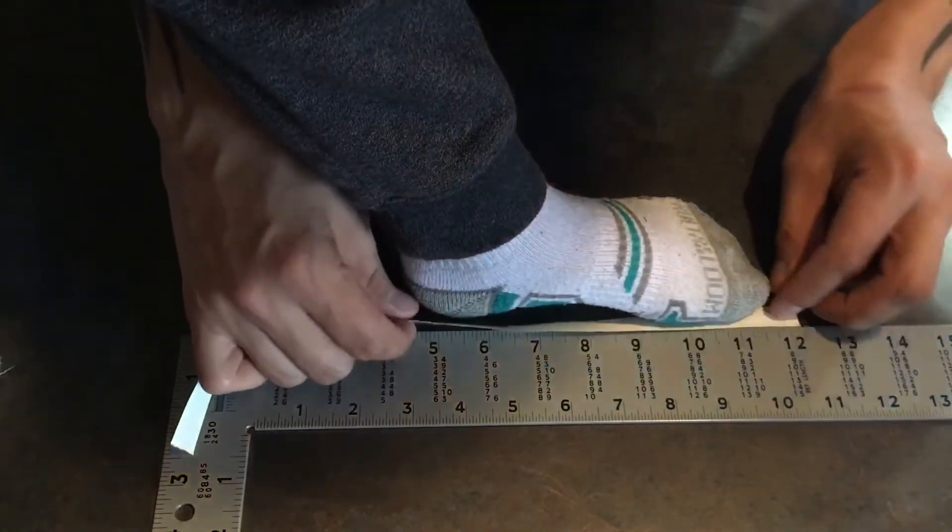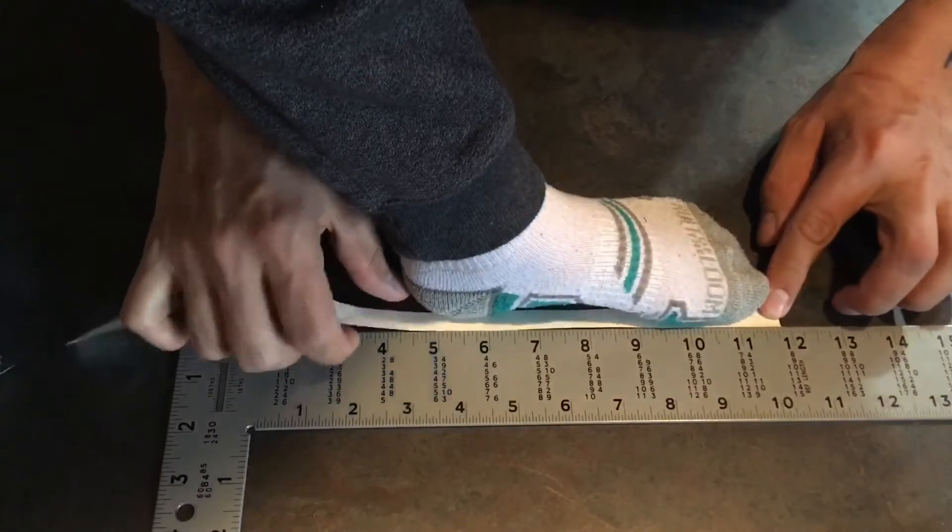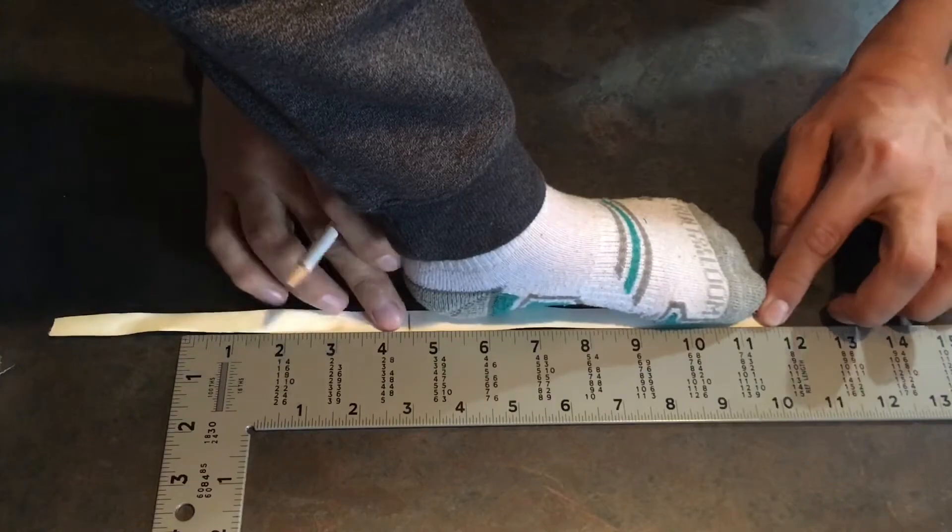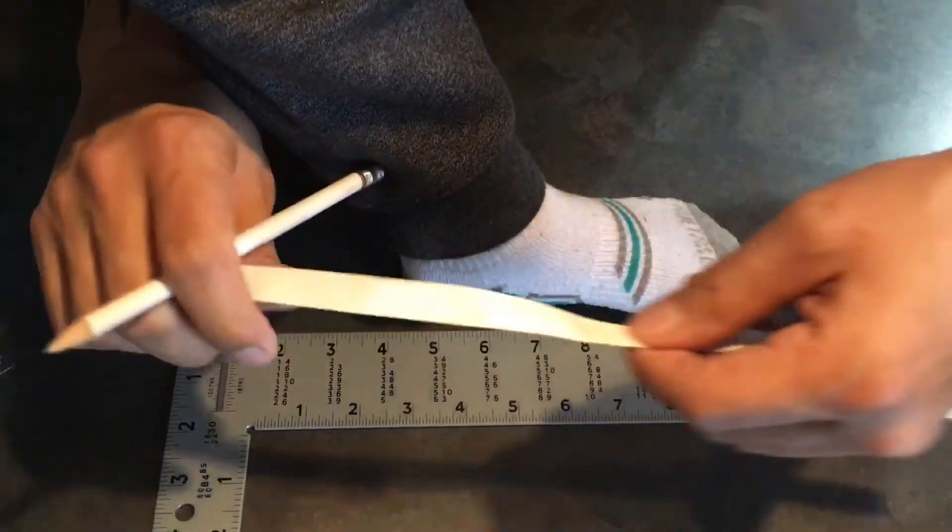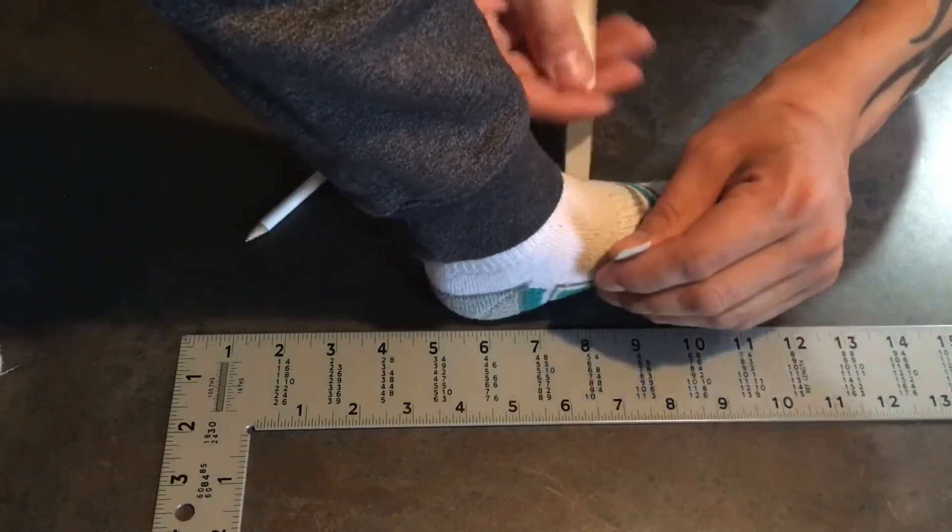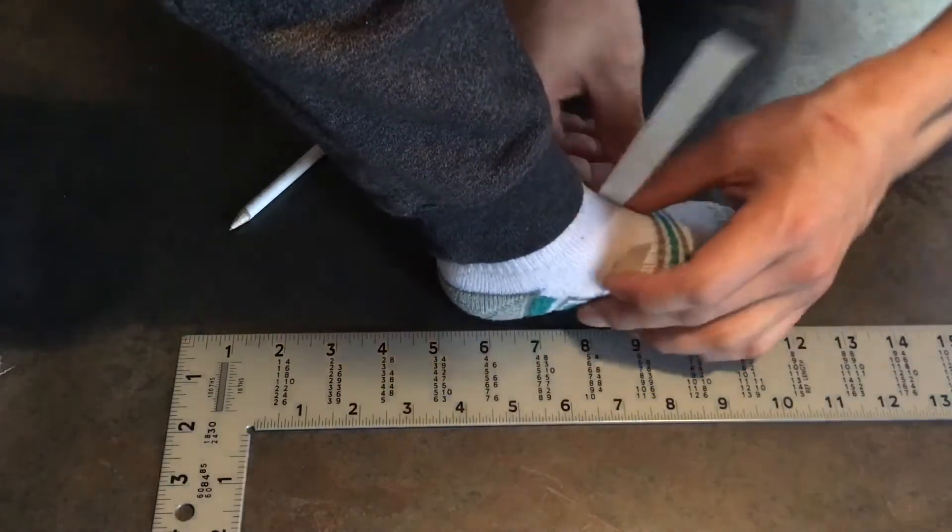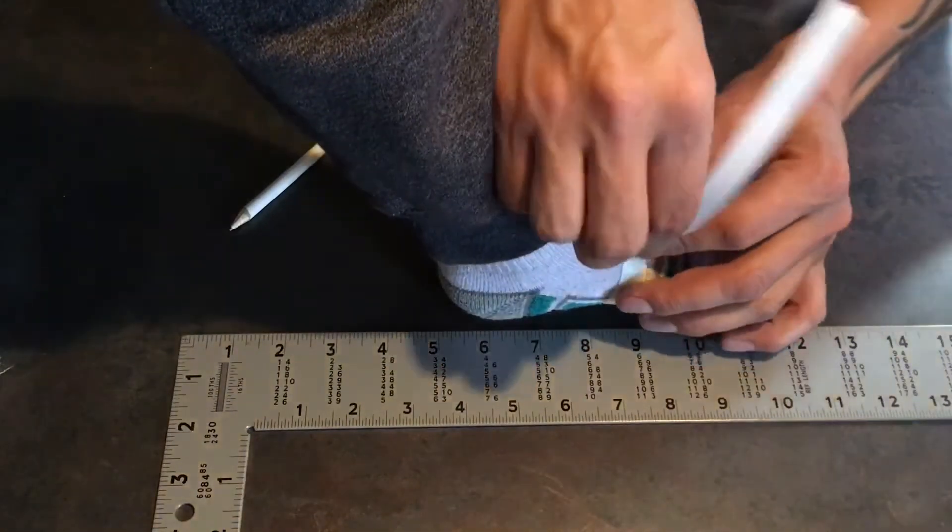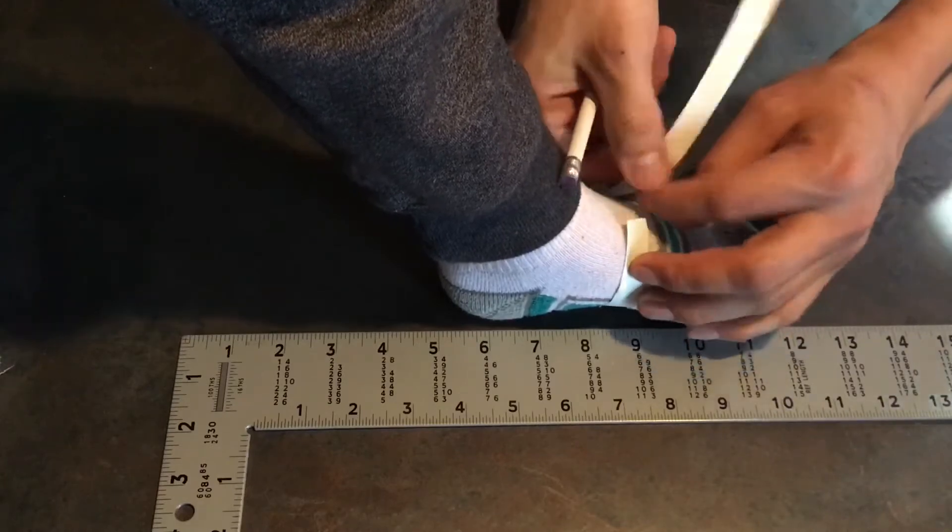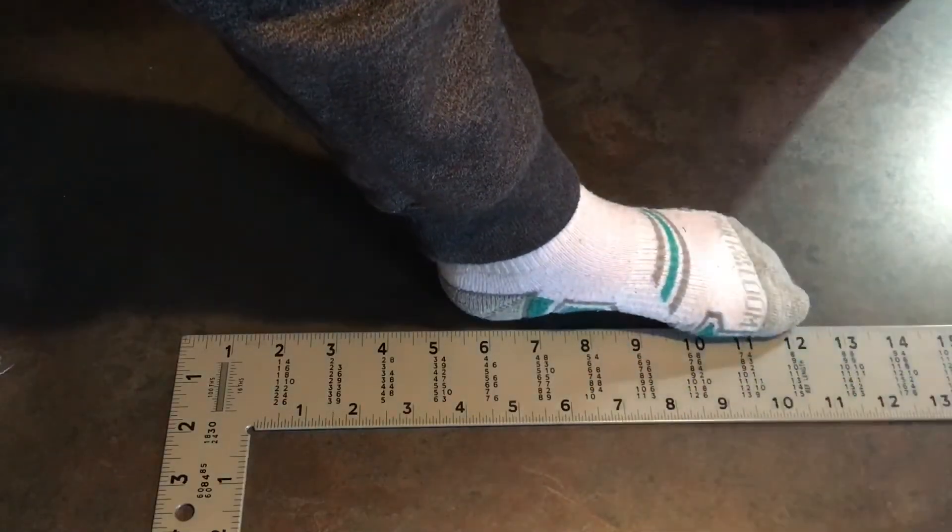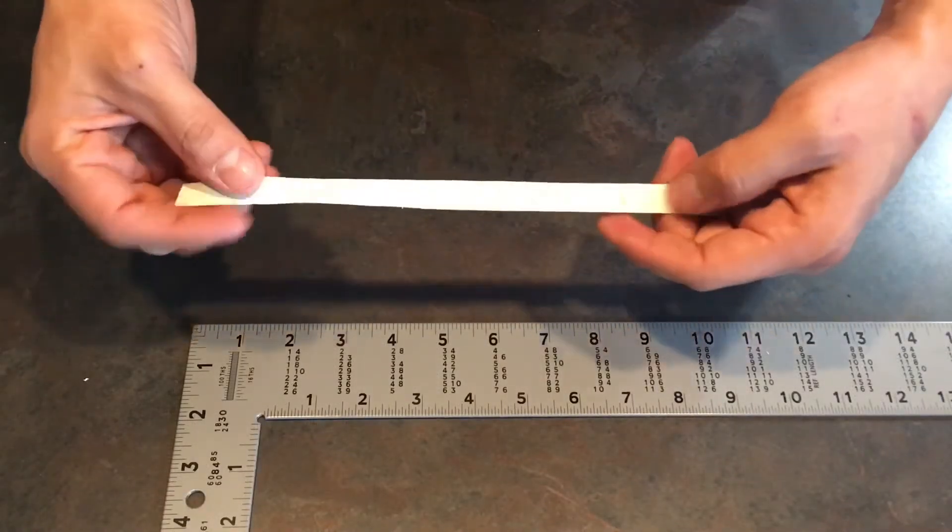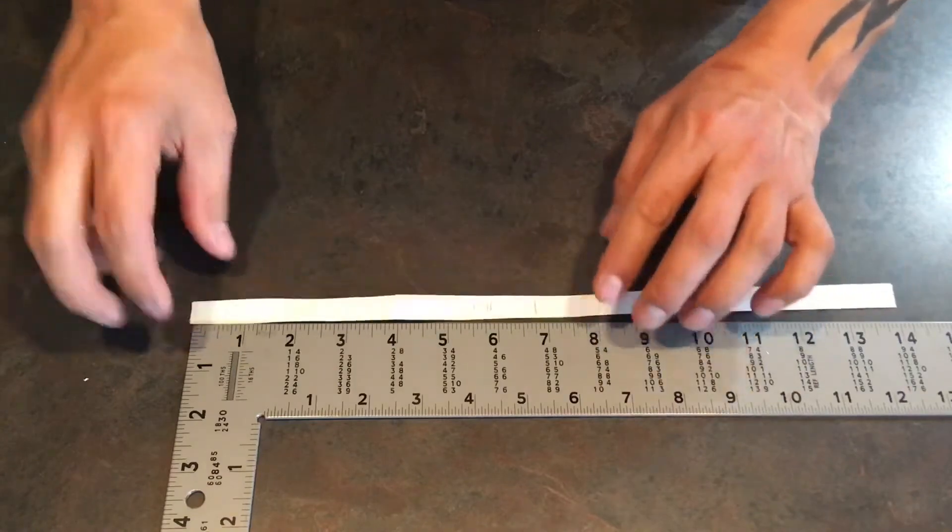Measure heel to toe, and then measure around the inside of your foot, just like that. Okay, so I got the measurements for heel to toe and around the foot. Now you're going to get a piece of paper.